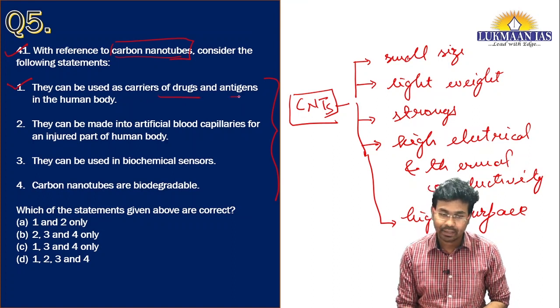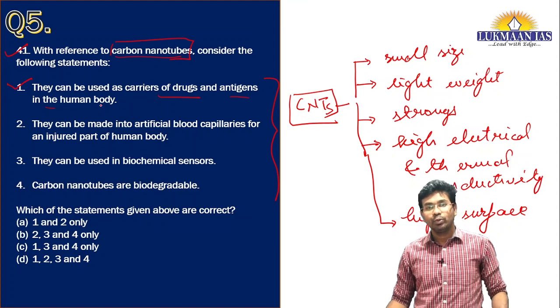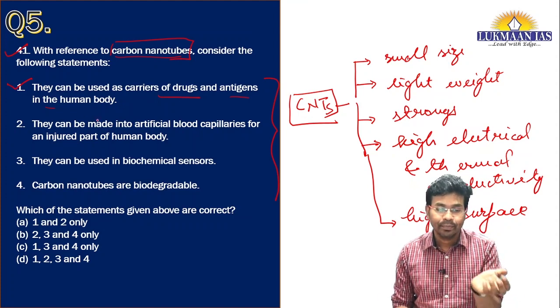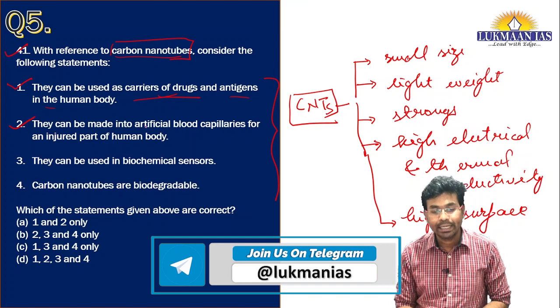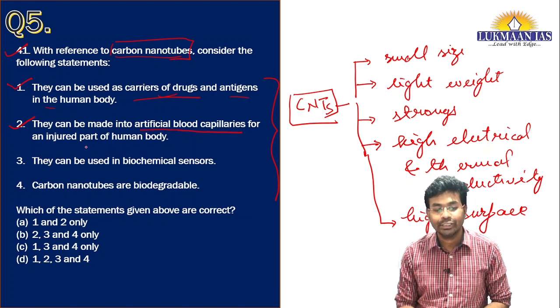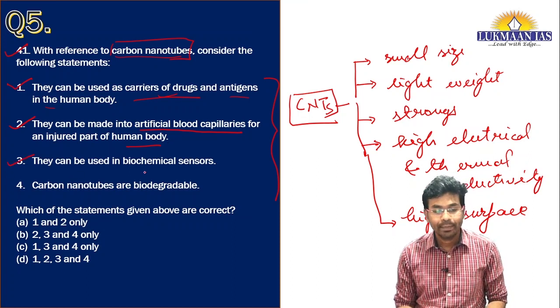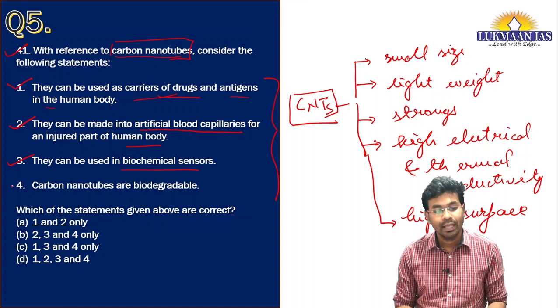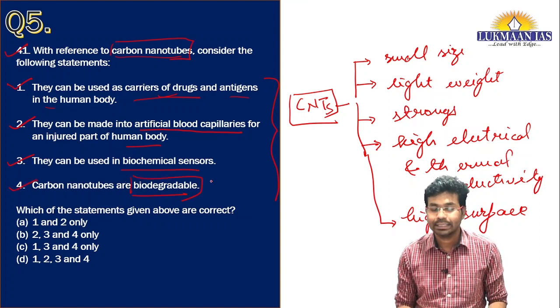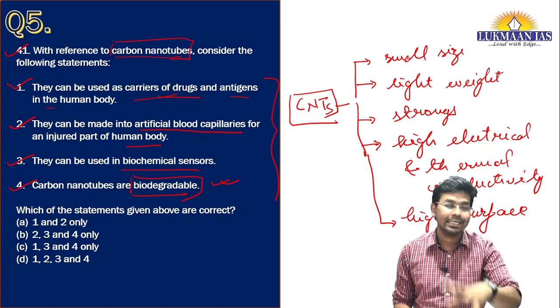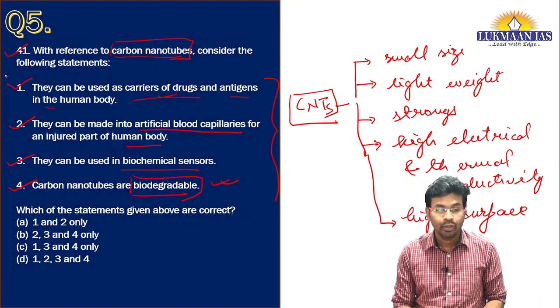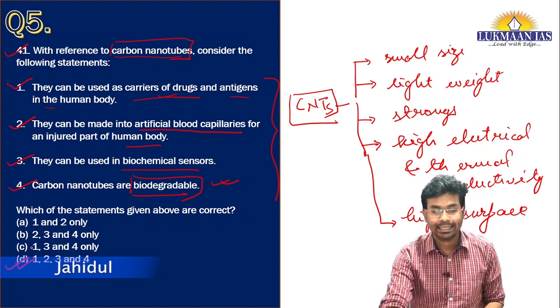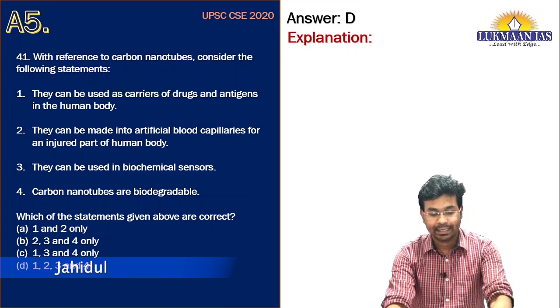Carbon nanotubes can be used as carriers of drugs and antigens in the human body — research has confirmed this. They can be made into artificial blood capillaries for an injured part of the human body. They can be used in biochemical sensors. Additionally, carbon nanotubes are biodegradable in nature, meaning they will not create environmental pollution when discarded. Since all these statements are correct, option D is the right answer.